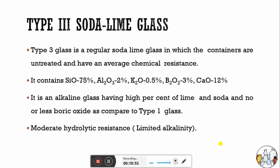Type 3 soda lime glass has almost the same composition as Type 2, mainly consisting of silicon oxides, aluminium, potassium, boron, and calcium oxide, but it is untreated and has average chemical resistance. It is an alkaline glass having a high percentage of lime and soda, and no or less boric oxide compared to Type 1 glass. It is moderately hydrolytic resistant with limited alkalinity.